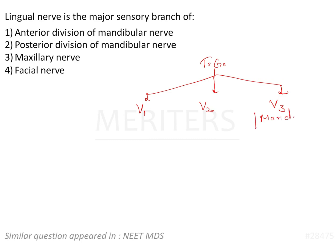Now the mandibular nerve further has branches. First there is a main trunk, after that there will be an anterior branch of the mandibular nerve and there will be a posterior branch of the mandibular nerve. I will be discussing the whole course of the mandibular nerve here.